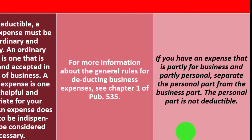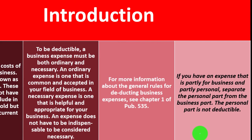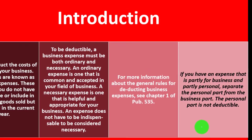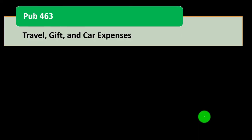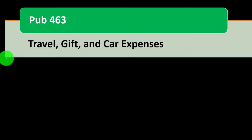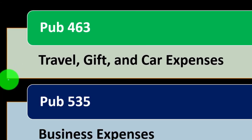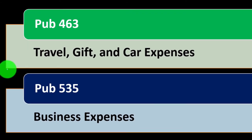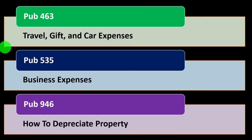The personal portion would not be deductible unless it falls into some other category — like interest on the home — where part of it could be allocated to the business and part to a Schedule A as deductible for some other purpose. More information on this can be found in Publication 463, which covers travel, gift, and car expenses — a common area that people have issues with — Publication 535, Business Expenses, and Publication 946, How to Depreciate Property.